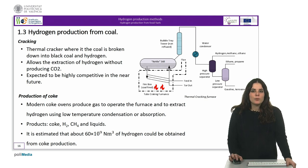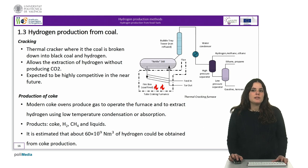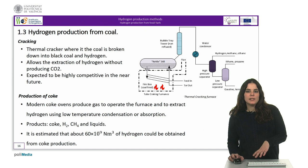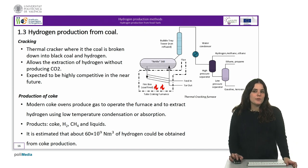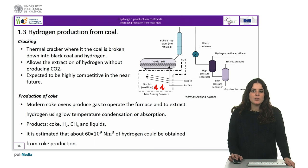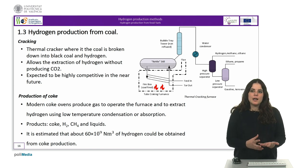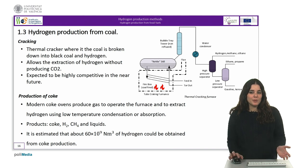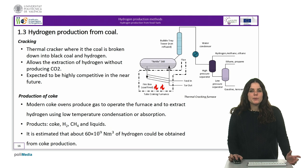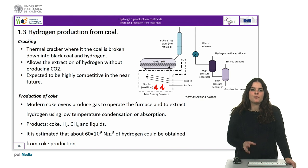The last process shown here is the production of coke. Modern coke ovens produce about 350 cubic meters of gas from one tonne of coal. Half of this gas is used to operate the furnace at temperatures above 1,000 degrees Celsius, and the remaining half is processed to extract hydrogen using low-temperature condensation or absorption. The products obtained in addition to coke are hydrogen at around 55% by volume, methane at around 25% by volume, and liquids such as light oils, ammonia compounds and tars. It is estimated that about 60 billion normal cubic meters of hydrogen could be obtained from coke production.